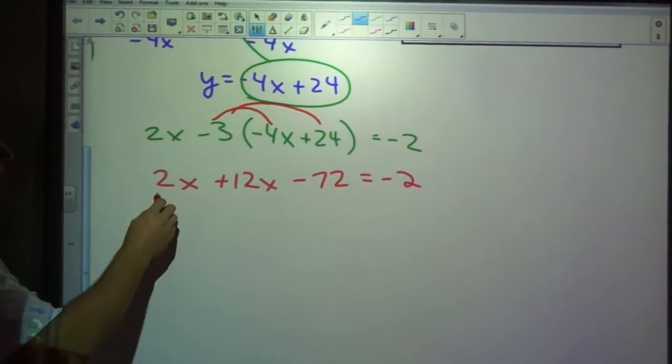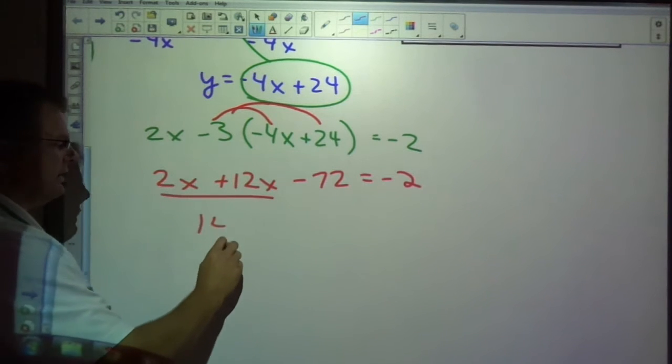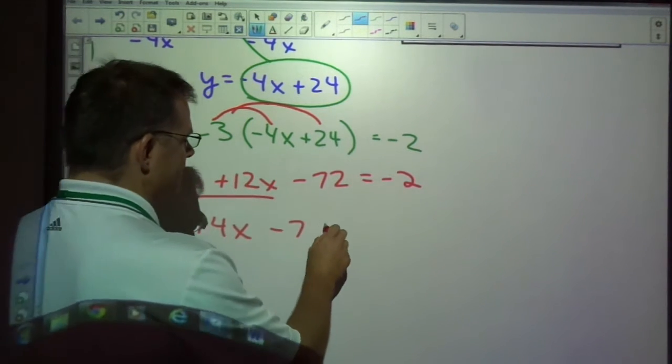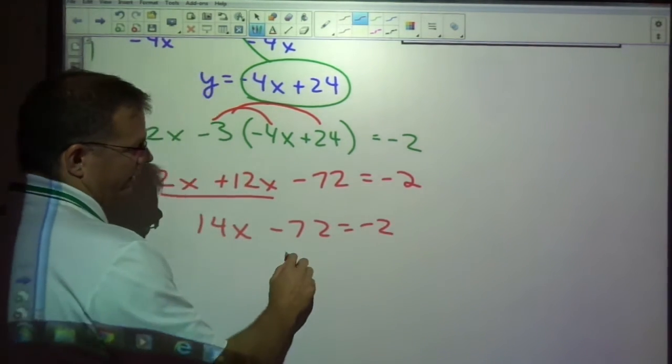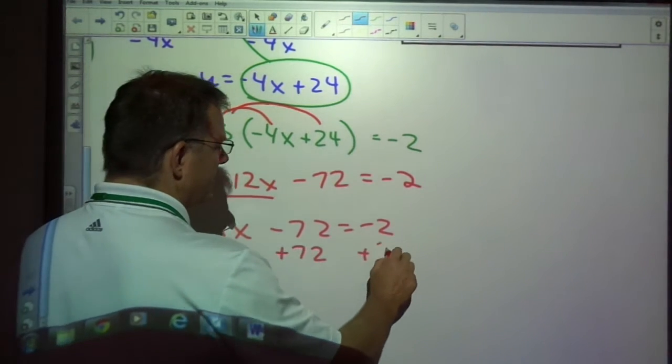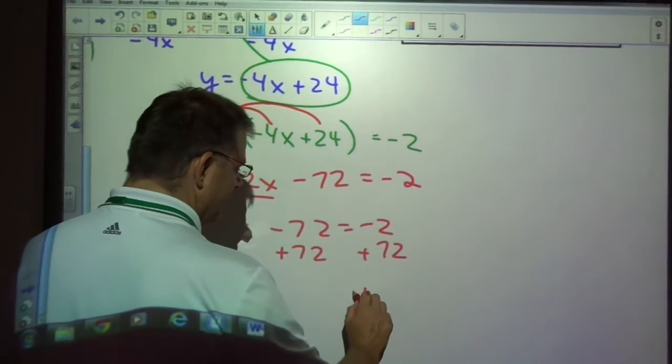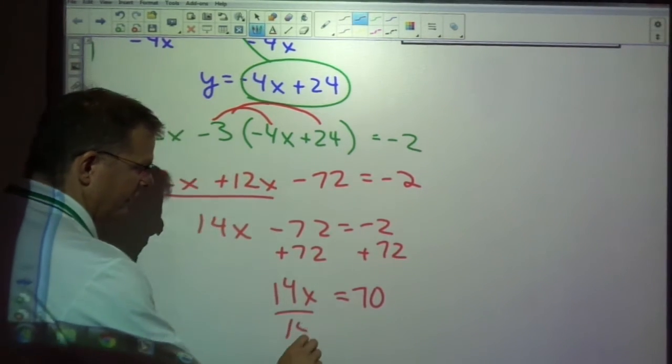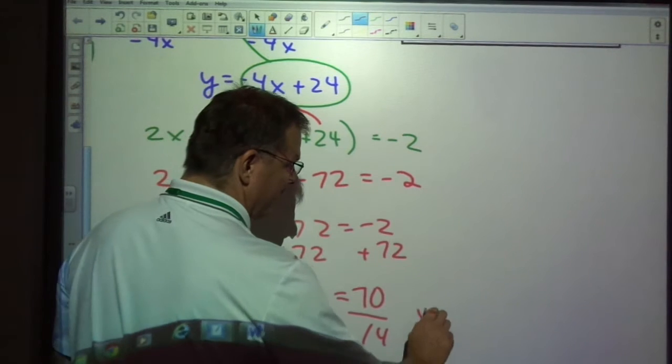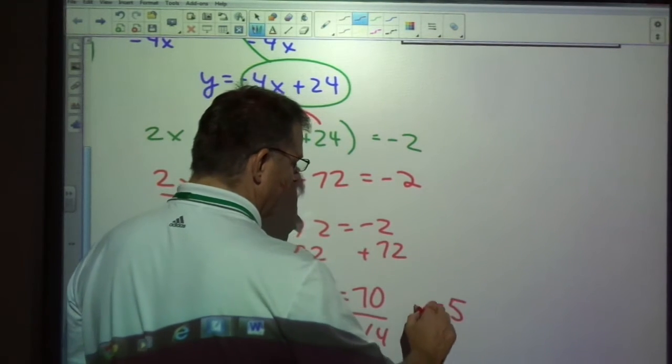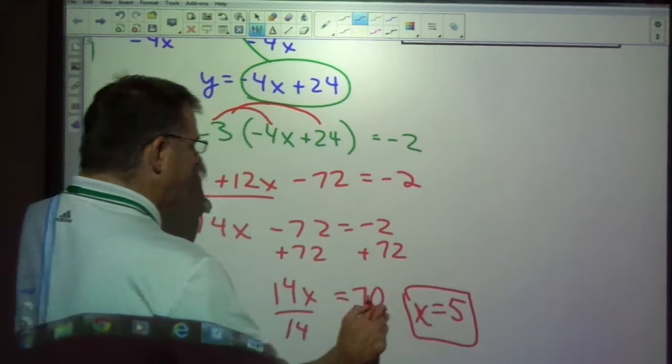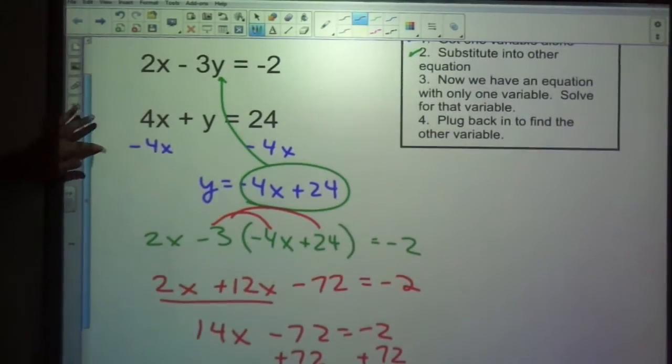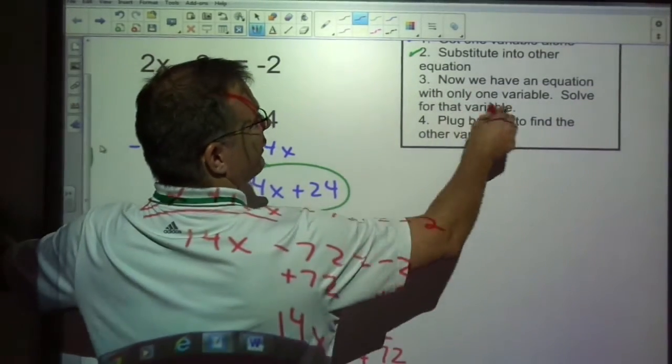Now I'll combine my x's. These make 14x. I'll get all the plain numbers on the other side. That is 70, 14x. And if I divide, that is 5. x equals 5. Okay, but I'm not finished. What I've done is I've found one of the variables. I solved for that variable.